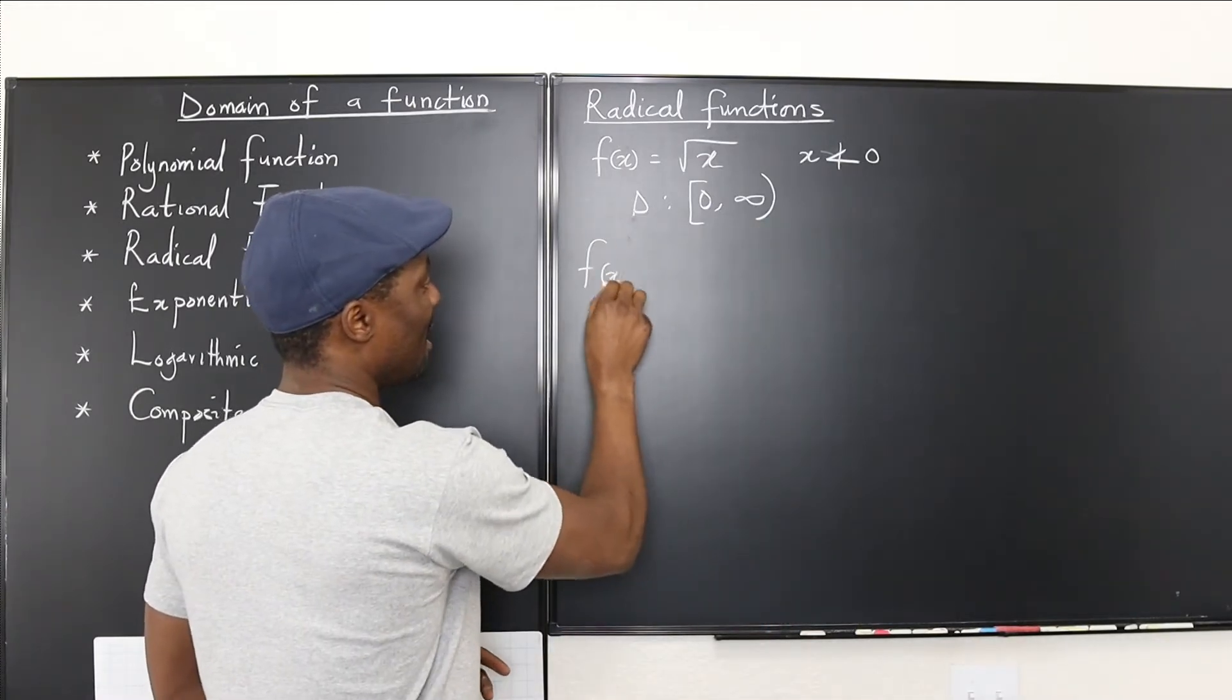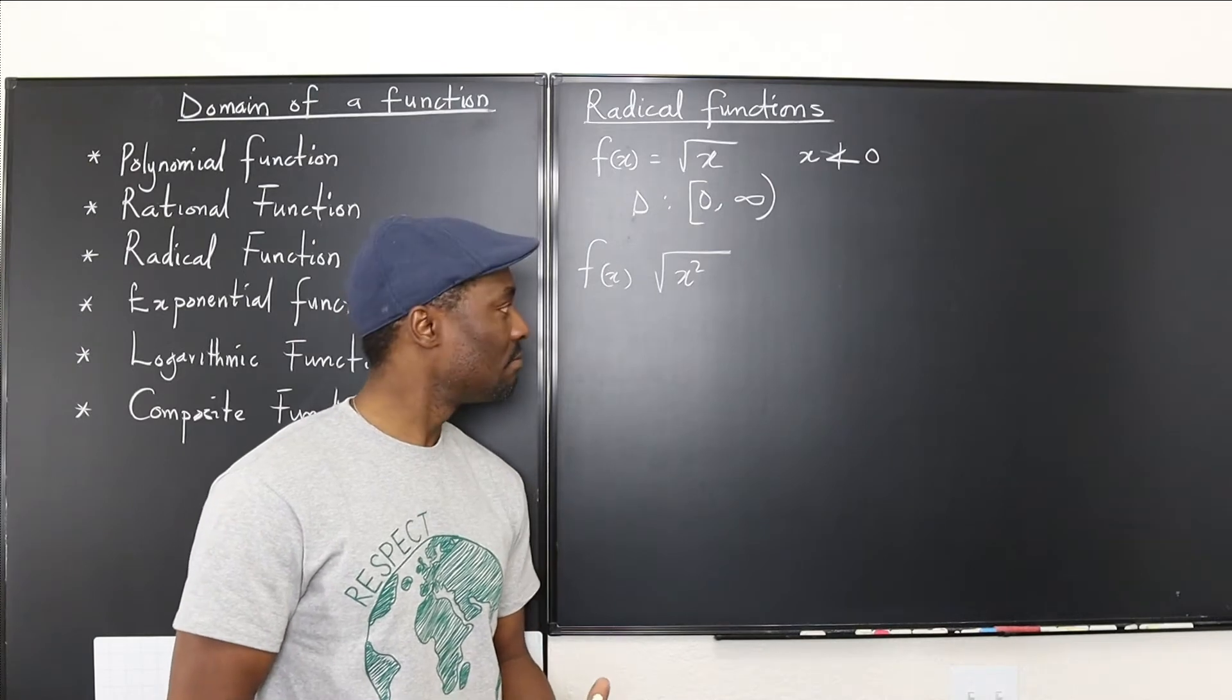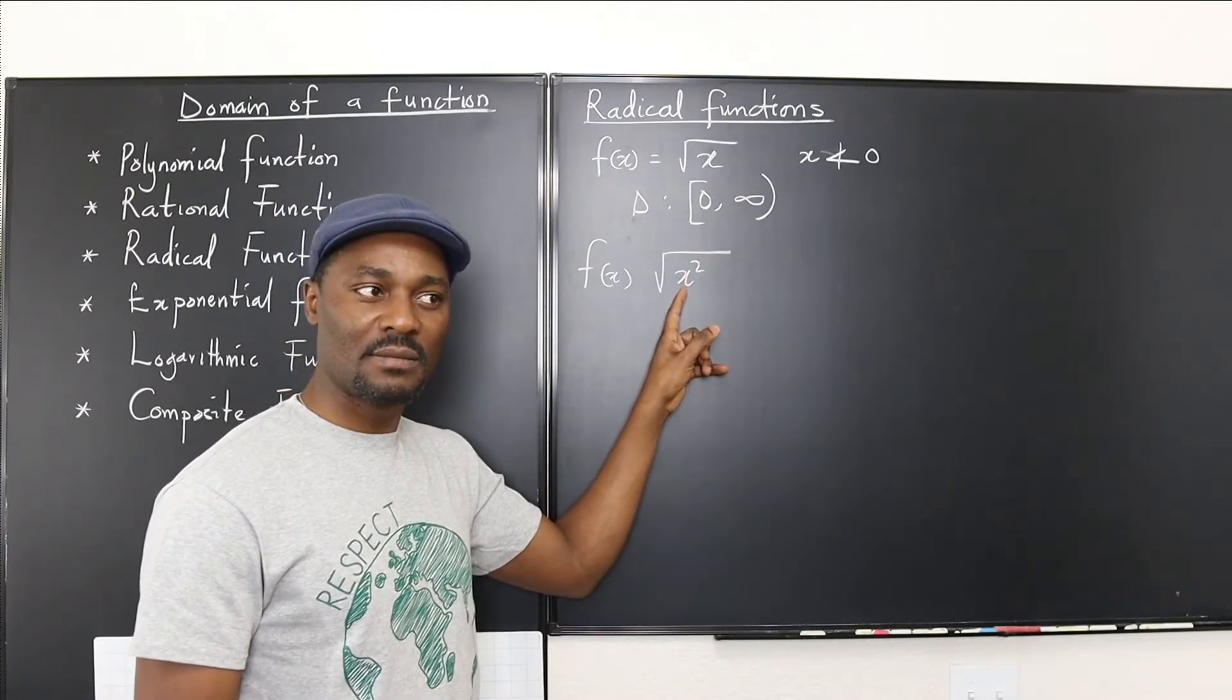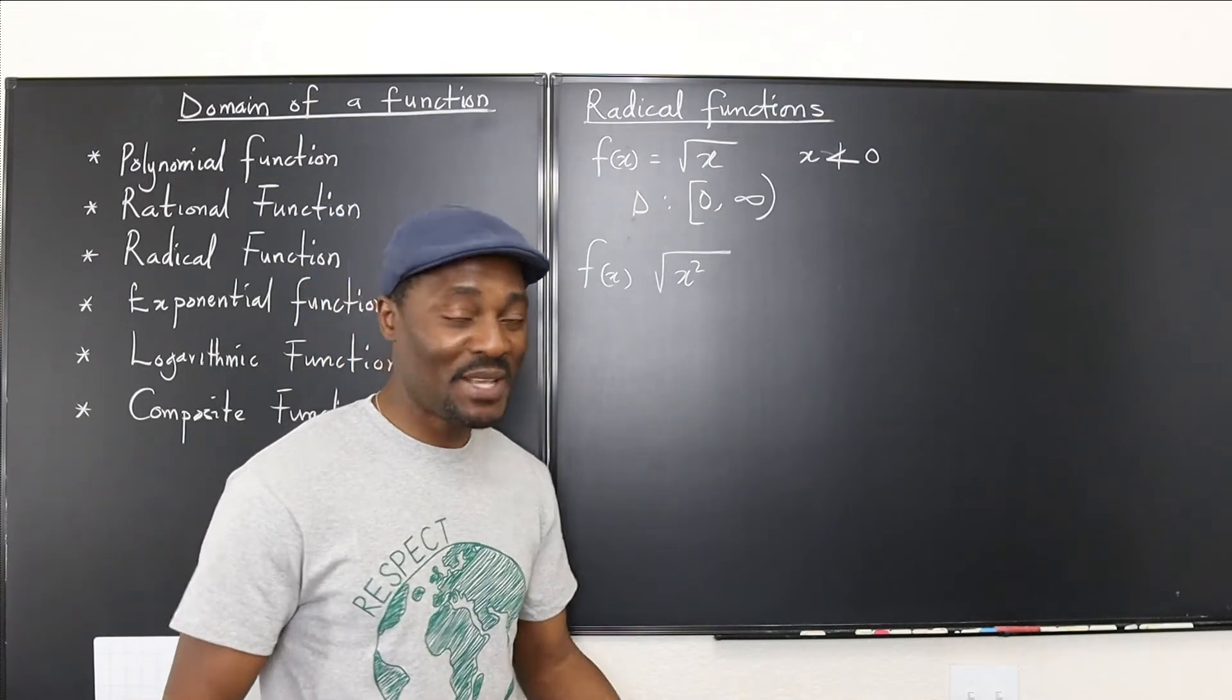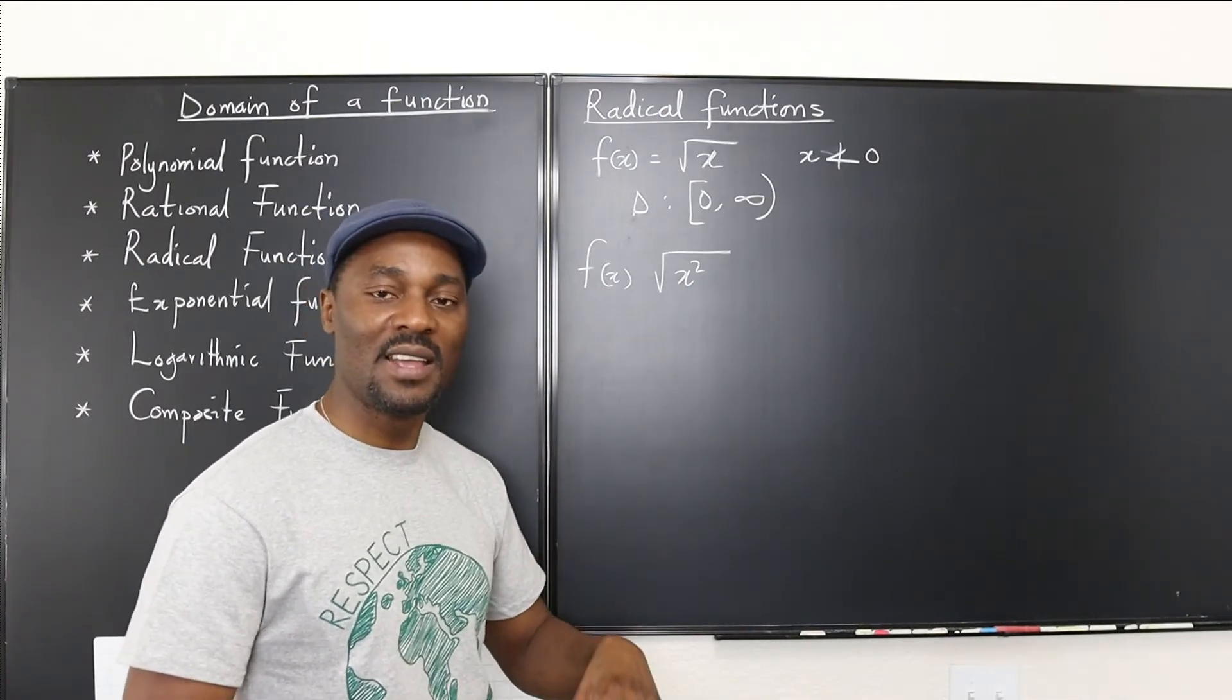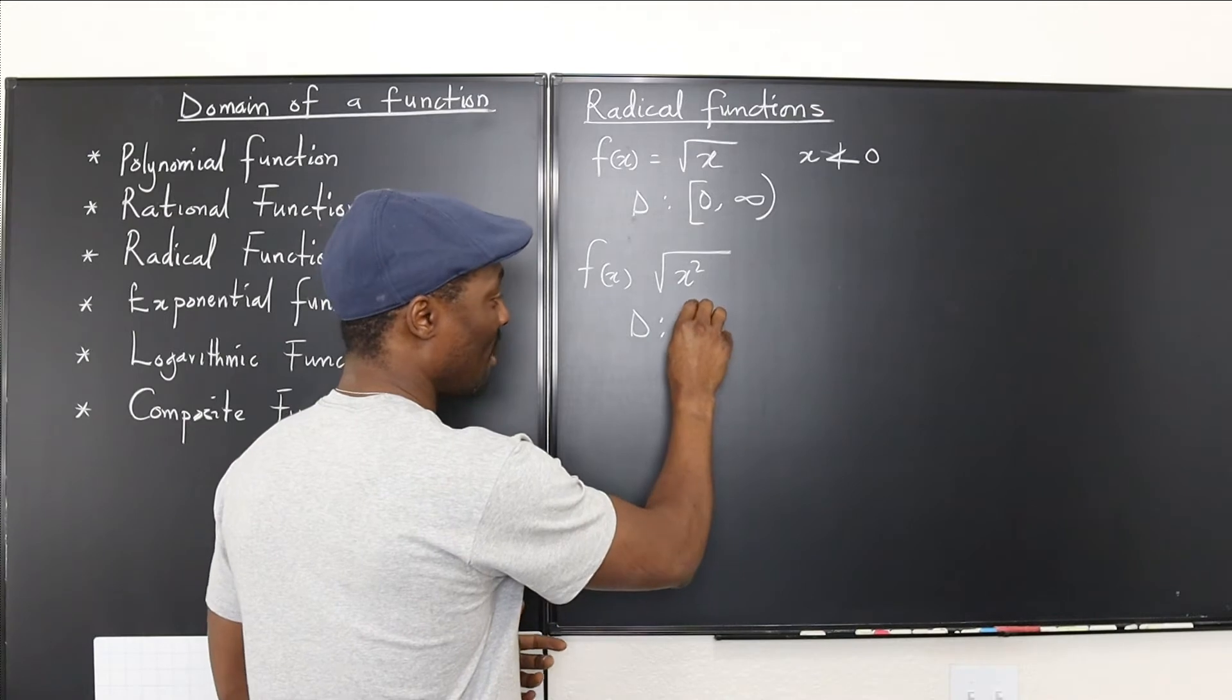Now, let's take another example. Let's say f(x) is the square root of x squared. What's the domain of this function? Is it possible that after you square a number, it will be negative? No. So the domain of this function is all real numbers, because even when x is negative, say you take negative 4, negative 4 squared is 16, and the square root of 16 has a real output, so it's not imaginary. So in a case like this, the domain is the set of all real numbers.